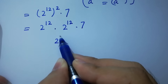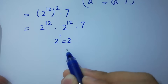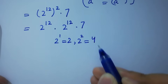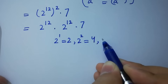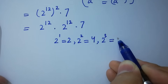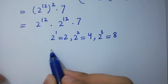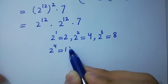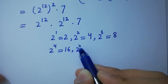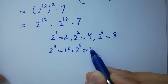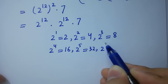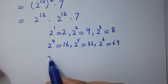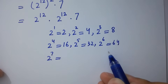2 to the power 1 equals 2, and 2 to the power 2 equals 4. Next, 2 to the power 3 equals 8. Next, 2 to the power 4 equals 16. Next, 2 to the power 5 equals 32. Next, 2 to the power 6 equals 64.